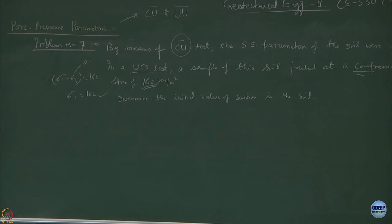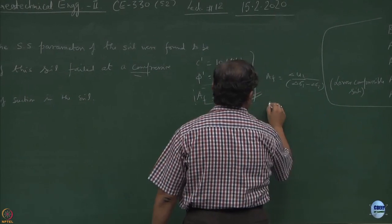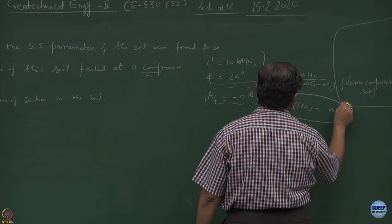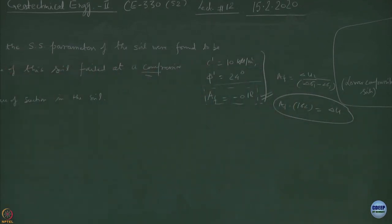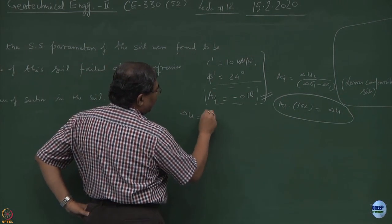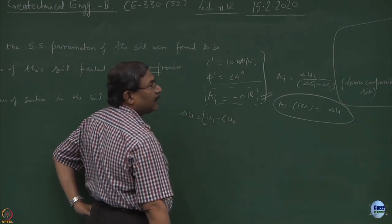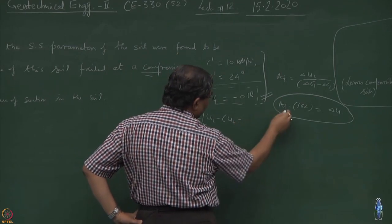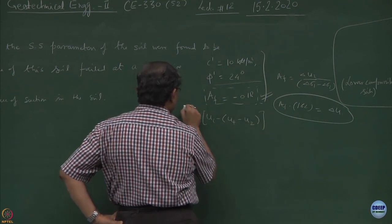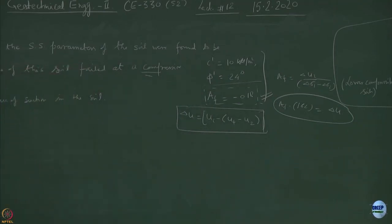How are we going to use the value of AF? AF multiplied by 162 should be giving you delta U value. What is the value of delta U? Delta U will be equal to initial pore pressure minus the final pore pressure, the pore pressure which is coming from here. Let us say U2.